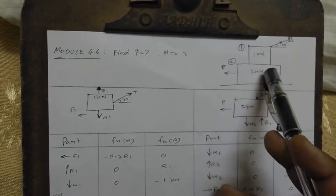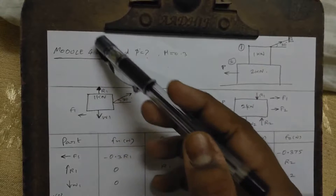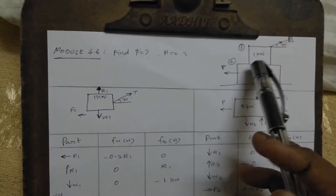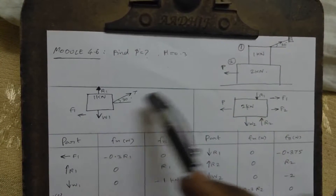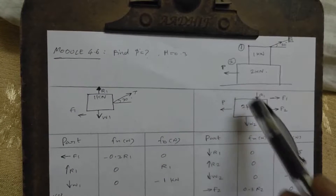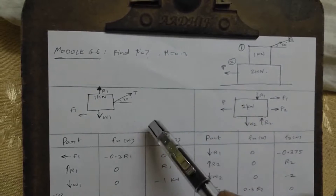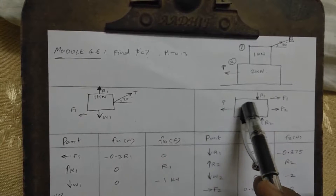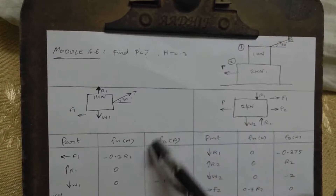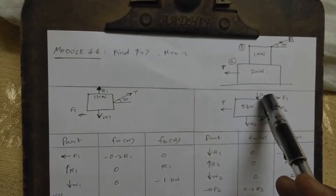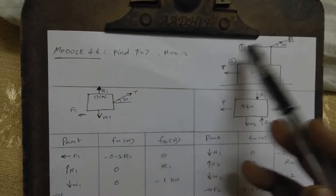The same method as for Model 4.5 will be used here. First, identify what is the free end and what is the topmost loading. That is the first step — to get the answer, starting with the second block, then once you go with the first block.